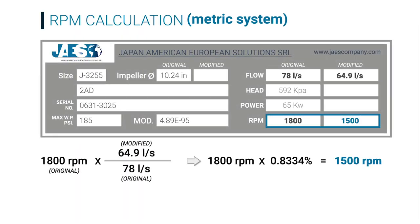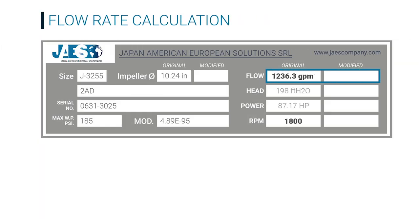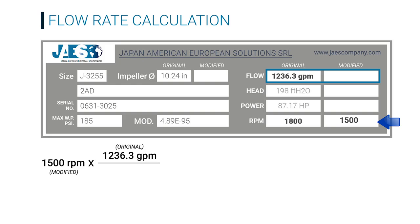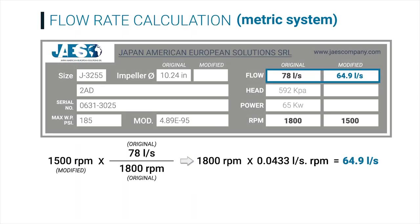Using the metric system, we can see that the flow rate values are in liters per second. Now, let's find out what will be the new flow rate if we want to change the RPM from its original value of 1800 to 1500. To do that, we use this formula: the modified RPM multiplied by the division between the original flow rate — 1236.3 gallons per minute — and the original RPM. Following this formula, the result will be 1030.3 gallons per minute. Using the metric system, the flow rate values are in liters per second and the resulting flow rate is 64.9 liters per second.